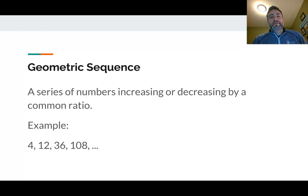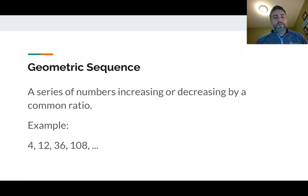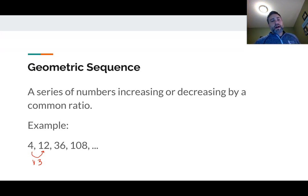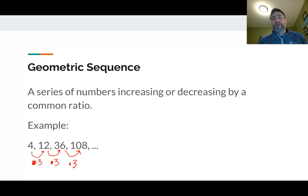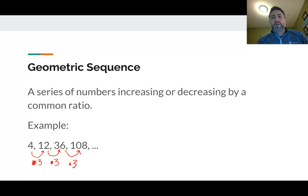A geometric sequence is a series of numbers increasing or decreasing by a common ratio. So what that means is if you look at the example below, we have 4, 12, 36, 108. We have a common ratio — we are multiplying the same number every single time to get to the next number. You can see that we are multiplying by 3 every single time. So that's what happens in a geometric sequence. We can multiply by a number like 3 or 4, by negative numbers, or by fractions as well. Essentially what's going on is we have a common ratio where we multiply the previous number to get the next number — a little different than arithmetic sequences where we added or subtracted.